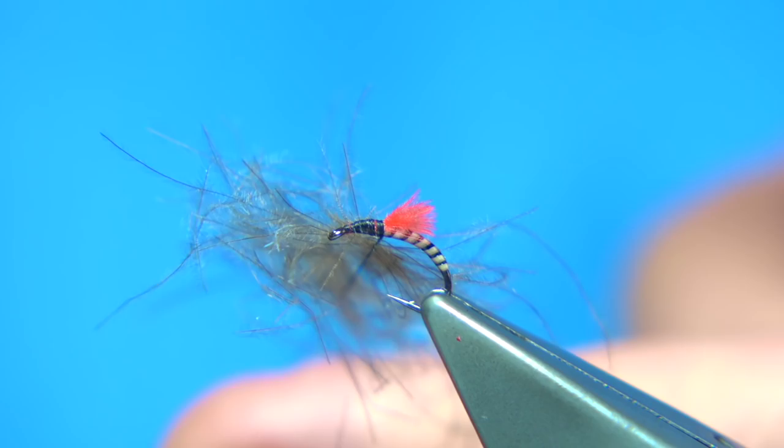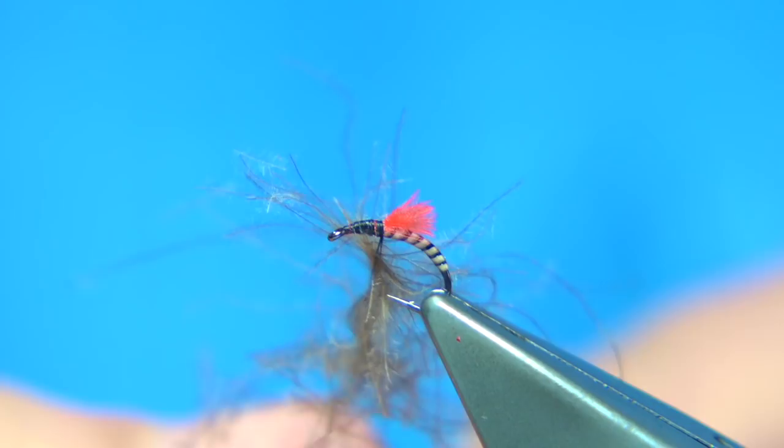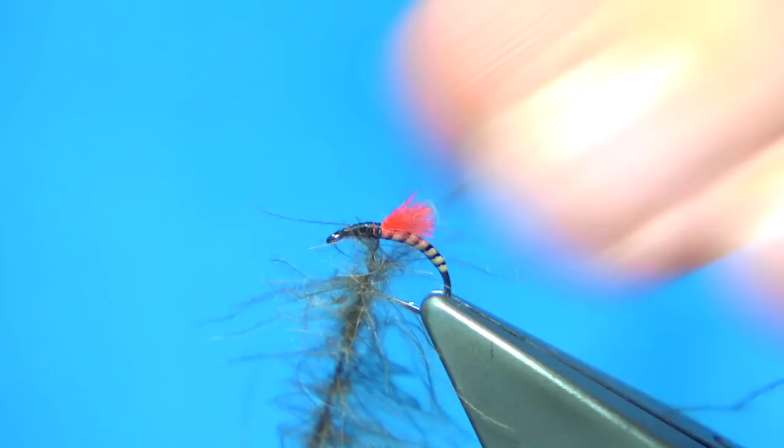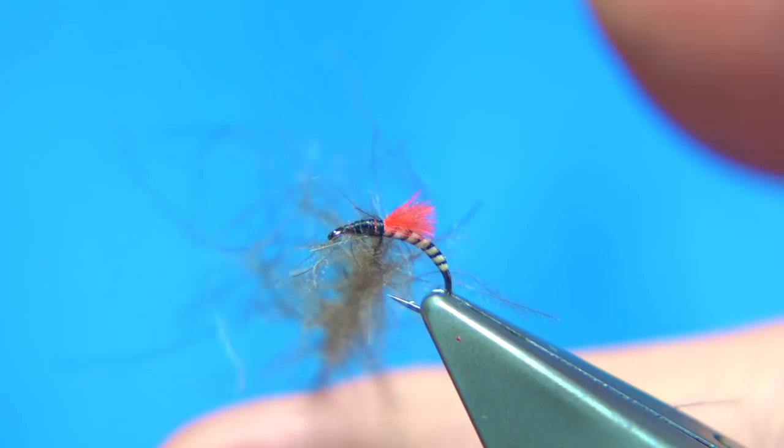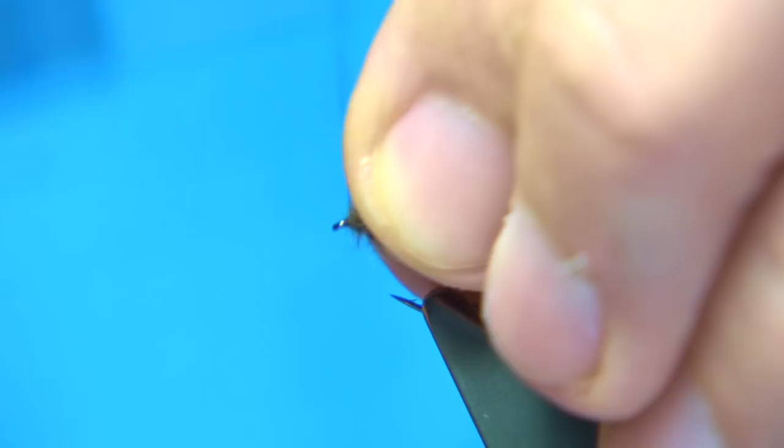And then the dubbing starts to rope. Just bring the bobbin holder a bit closer, another spin to make sure. And then what we want to do is basically wind it on like imagine this being a hackle. So we draw back the fiber and wind one turn in front of the other. Just keep winding down towards the eye until we get to the eye, which is there.